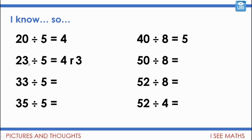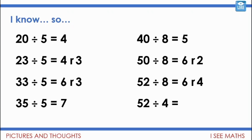33 divided by 5 — that's another 10, which is two more lots of five, so six remainder three. 35 divided by 5 — how many fives in 35? Seven. Notice those two extra were enough to make another whole lot of five. Now for the other sequence: 40 divided by 8 equals 5. 50 divided by 8 — that's one more lot of 8 with a remainder of 2. 52 divided by 8 is six remainder four. Then 52 divided by 4 — there'll be double the number of fours as eights, so double 6 is 12, plus the remainder of 4 makes another one, giving 13.